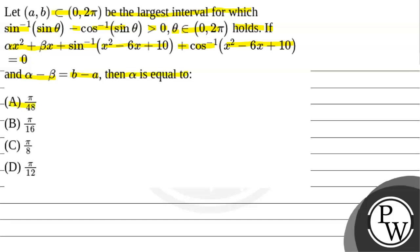option (A) π/48, option (B) 5/16, option (C) 5/8, or option (D) 5/12.